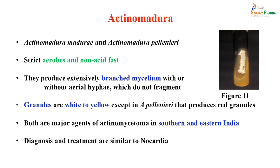Actinomadura can be Actinomadura madurae or Actinomadura pelletieri. They are strict aerobes but non-acid-fast compared to nocardia. They produce extensively branched mycelium with or without aerial hyphae, which do not fragment — unlike nocardia which does fragment. They produce white colonies, and the granules they produce in mycetoma are white to yellow, except in pelletieri, which produces red granules. Both are major agents of actinomycetoma in southern and eastern India, and diagnosis and treatment are similar to nocardia.